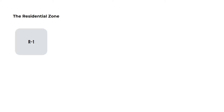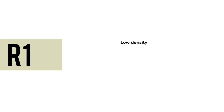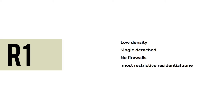Residential relates to density. The residential zone includes R1, R2, R3, R4, and R5. R1 is low density, single detached, with no firewalls, and is the most restrictive residential zone. In R1, you can find single-family dwellings — bungalows and other standard or basic dwelling units.